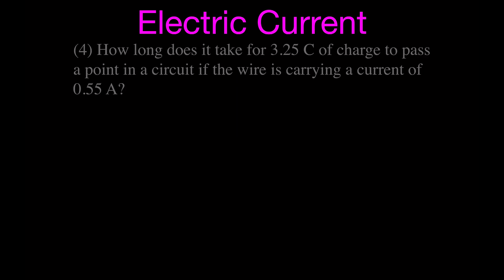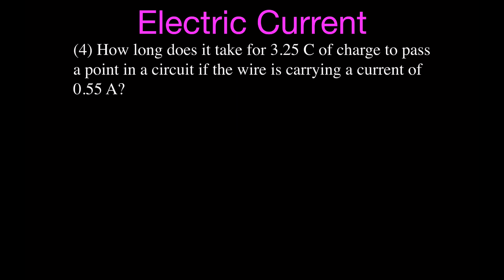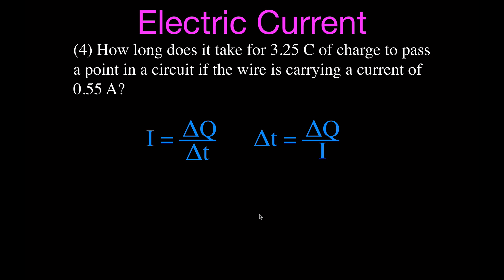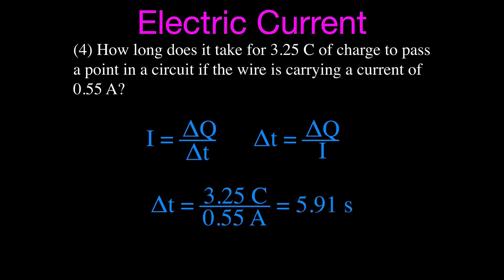The next problem asks how long it takes for 3.25 coulombs of charge to flow past a point in a circuit if the wire carries a current of 0.55 amperes. We want to solve for time, so we rearrange the equation: time equals charge divided by current, which is Q divided by I. That gives a time of approximately 5.91 seconds.